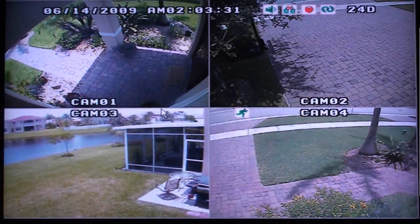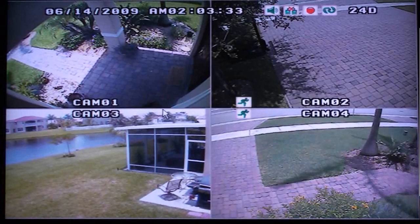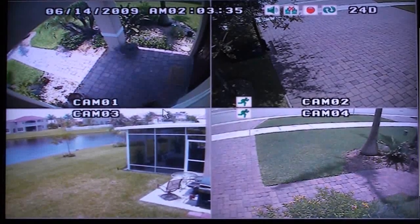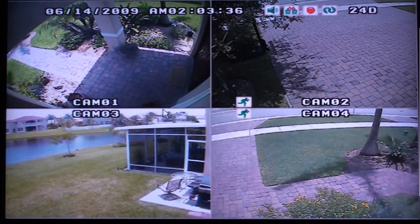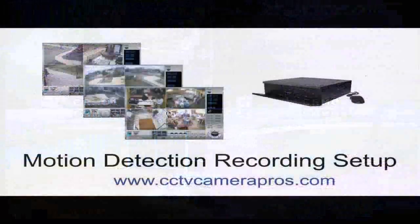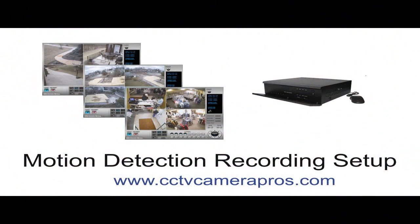Your system is now recording based on motion detection only in the areas that you have set up. Notice on the screen, a small image appears any time there is motion detected in the camera. We hope that this video demonstrates how easy it is to set up motion detection recording using CCTV Camera Pro's 4 Channel DVR. Please contact us at www.cctvcamerapros.com if you have any questions.